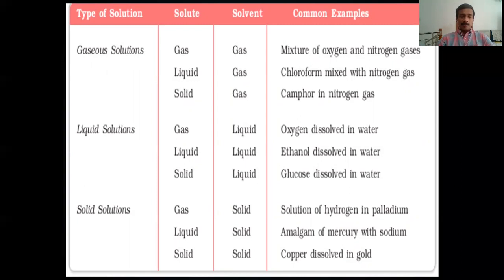Now solid solutions. Gas dissolved in solid — hydrogen in a palladium electrode is an example. When hydrogen gas is bubbled through palladium or platinum, hydrogen gas dissolves in palladium to form a solution. Liquid dissolved in solid — amalgams of mercury with sodium or zinc. These amalgams are examples of a liquid dissolved in solid.